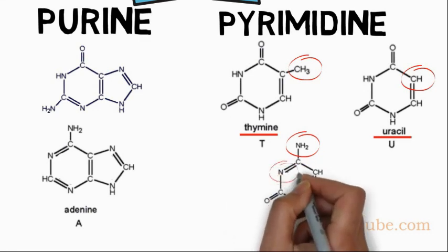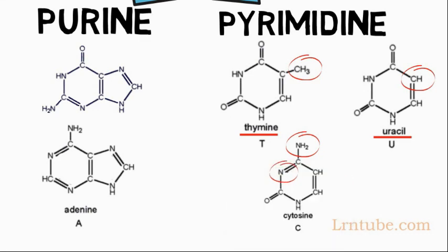And then on the third atom, which is nitrogen, there is no hydrogen. That is just what differentiates the cytosine from both the thymine and uracil.